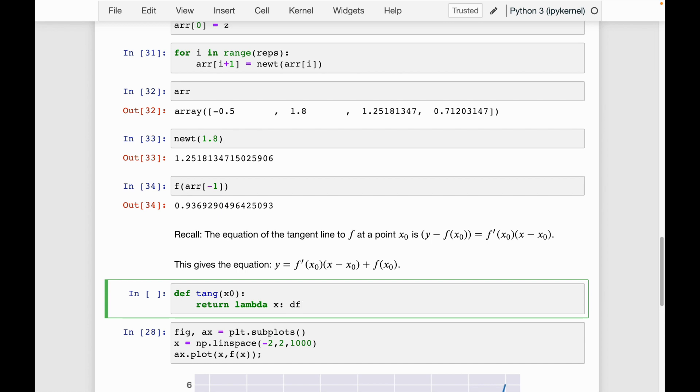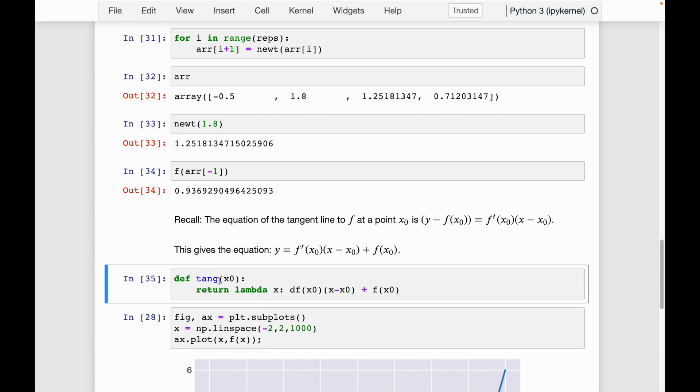So all we need to do is just, that's the function that we want to return. So remember df is our derivative, so df of x naught, and here we have x0 times x minus x0 plus f of x0.